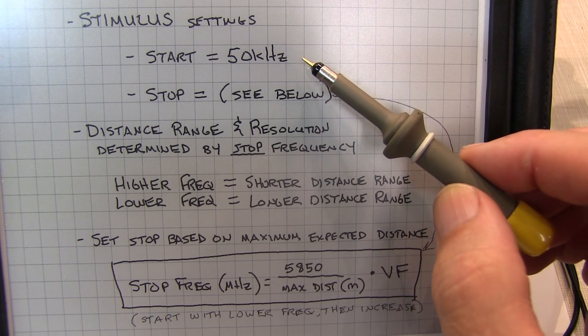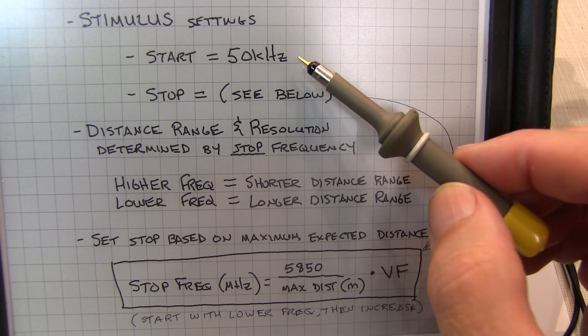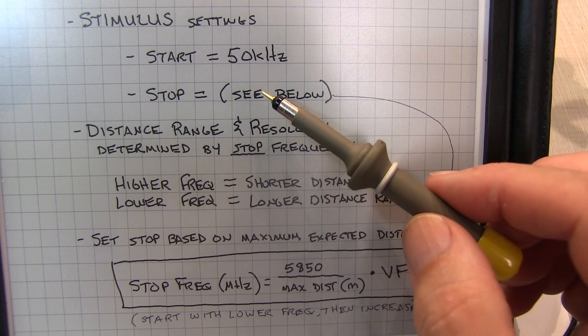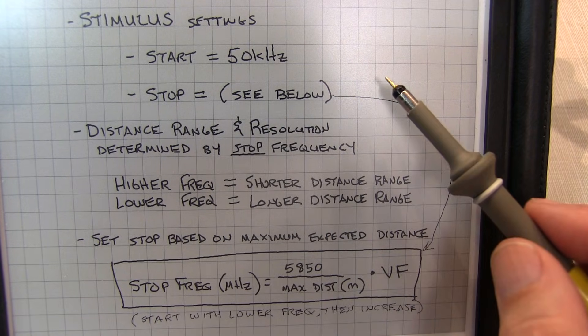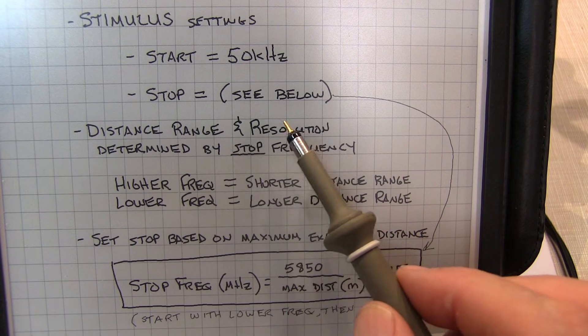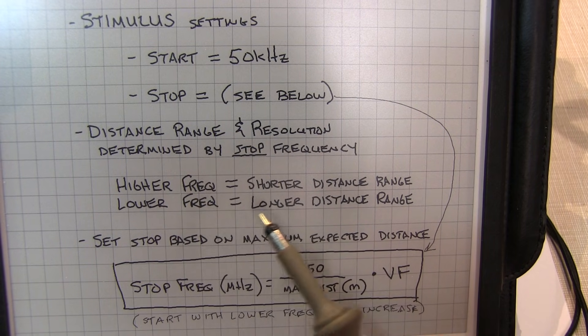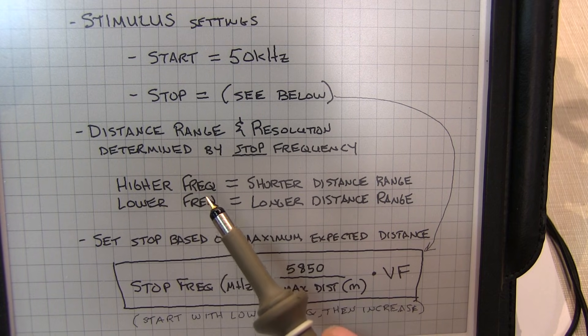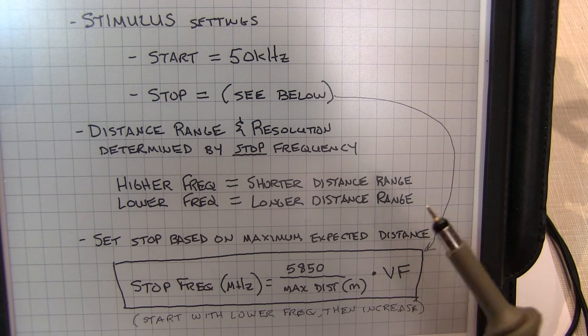The low-pass transform needs to extrapolate down to DC, so we set the start frequency as low as possible. On the NanoVNA, that's 50 kHz. The stop frequency, though, is going to determine the maximum distance that the transform will measure over. The higher the stop frequency, the shorter the total distance you can measure. The lower the stop frequency, the longer distance you can measure, but at a reduced resolution.